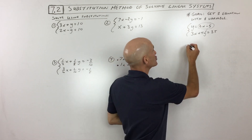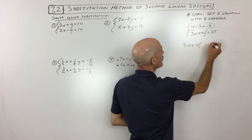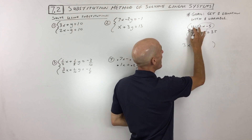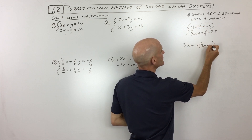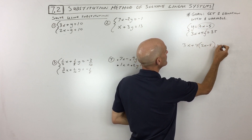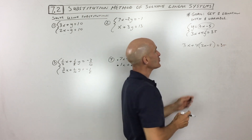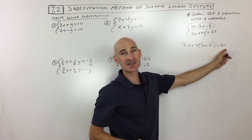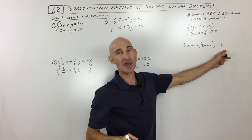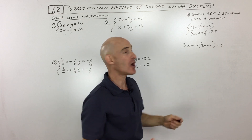So I'm going to show you that right here. We've got 3x plus 4, and instead of putting y, I'm going to put what y equals. Now if you look closely, you can see there's just an x in this equation — it's only one variable. So now we can solve it.